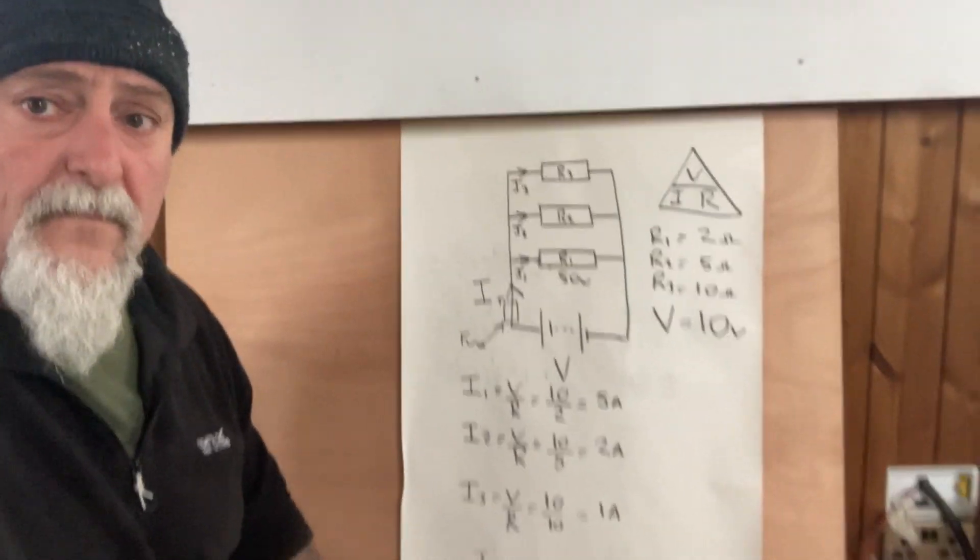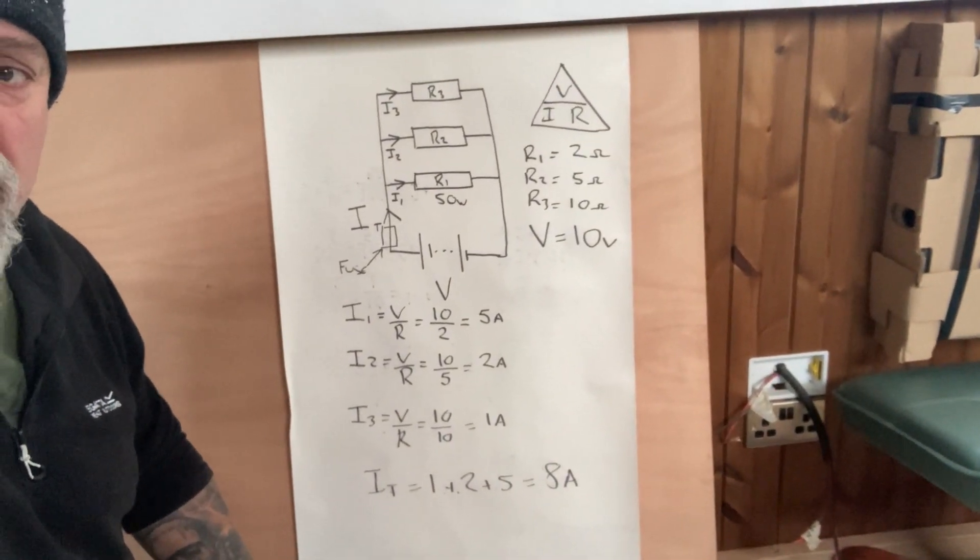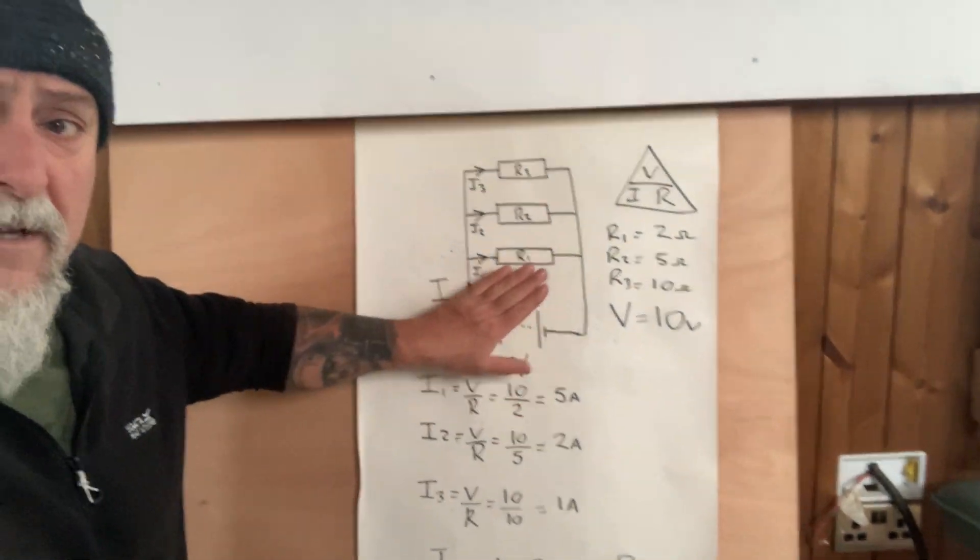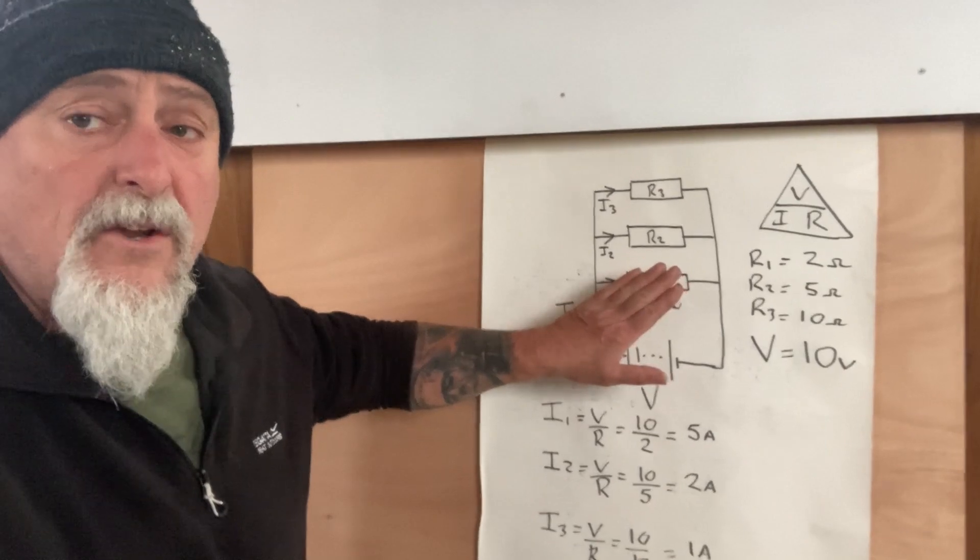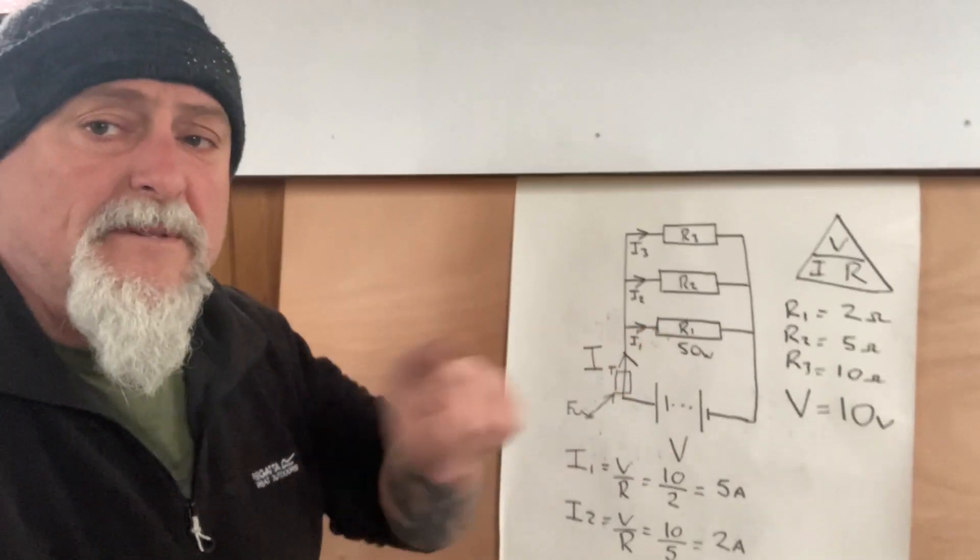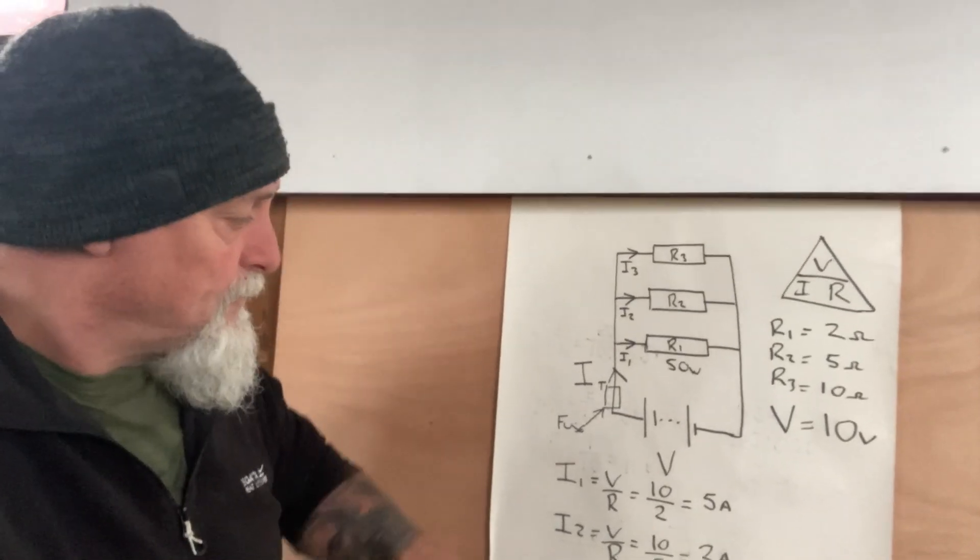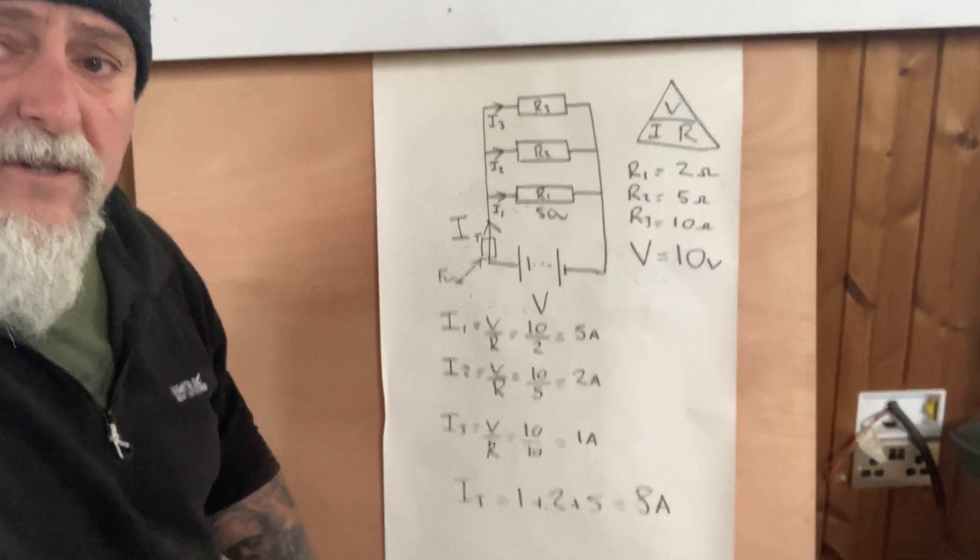So guys, that's parallel circuits—that's a quick example of how parallel circuits work. Voltage is common, current is not. Different to series. Series current is common because it flows through each one like a train, and voltage is split between the loads or the resistors. So very different kind of circuit really, but with what we know, all solvable just the same.